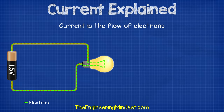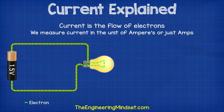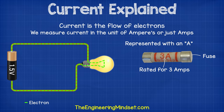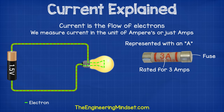We refer to the flow of electrons as current and we measure this in the unit of amperes, although you'll usually just hear people say amps. This is represented with a capital A. For example, this fuse has a 3 and a capital A, which means it's rated to 3 amps of current. We'll look at how we use fuses later on in this video.